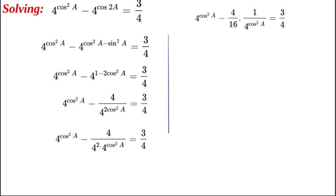Now what we're going to do is introduce t = 4^(cos²A). This will become t - (4/16)(1/t) = 3/4, and this will simplify as t - 1/(4t) = 3/4. Now let's keep working on this. We can multiply across by 4t and we get 4t² - 1 = 3t.